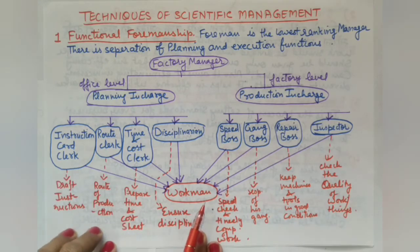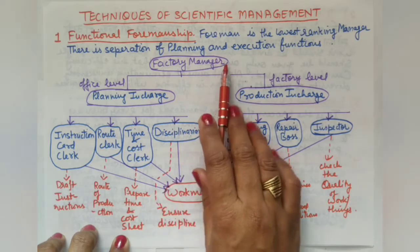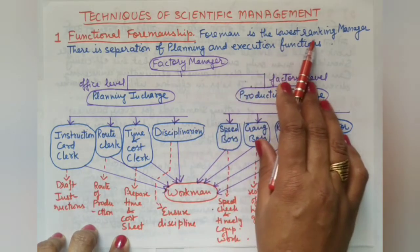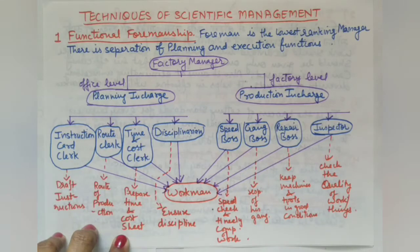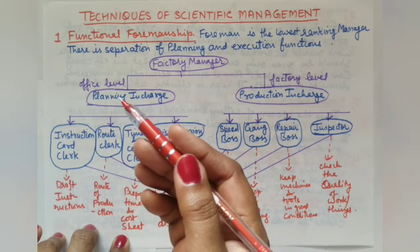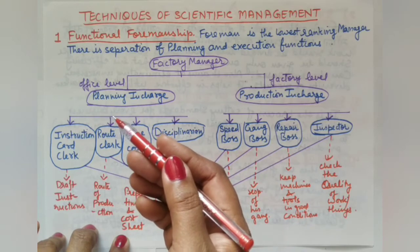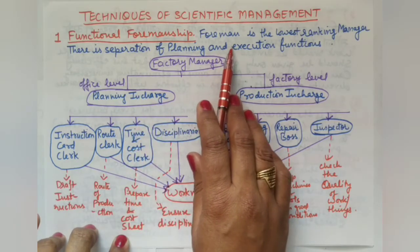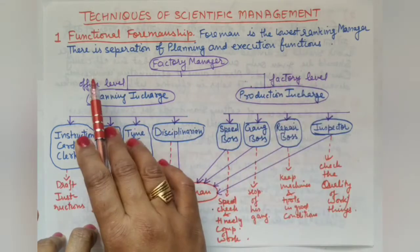F.W. Taylor's first technique is Functional Foremanship. A foreman is the lowest-ranking manager, at the operating level of management. Taylor introduced the separation of planning and execution work. Traditionally, one factory-level manager handled everything. Taylor divided this into a planning in-charge and a production in-charge.